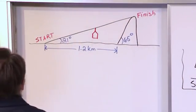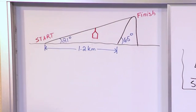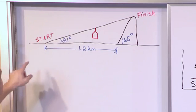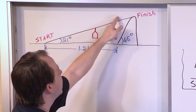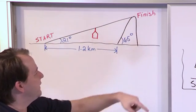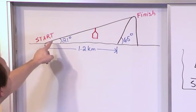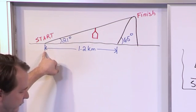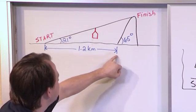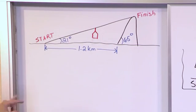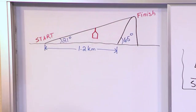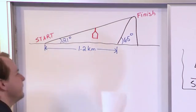Here is a drawing that you'll be frequently given in problems like this. You have a cable car or ski lift that starts from the ground and goes along the wire up to the top of the mountain. The angle that the wire makes with the ground is 21 degrees. The distance from the start to the base of the mountain is 1.2 kilometers and the angle between the slope of the mountain and the ground is 65 degrees. The question is how far does the cable car travel from start to finish?